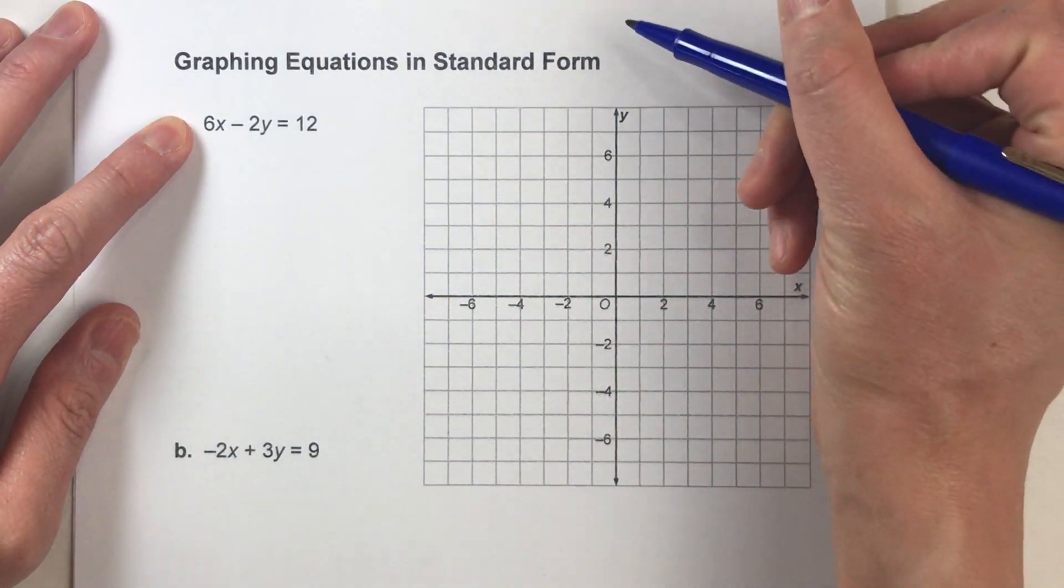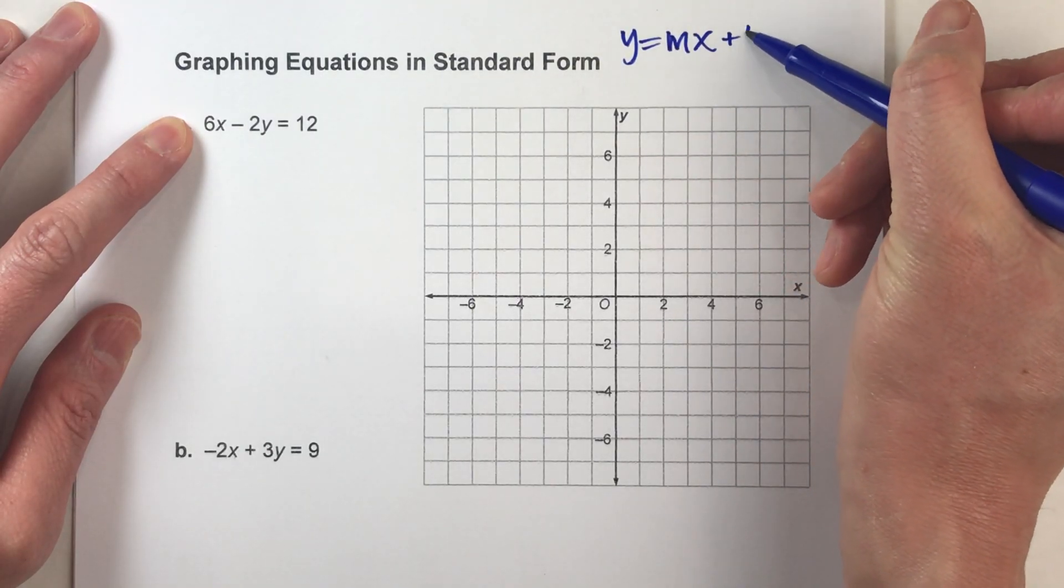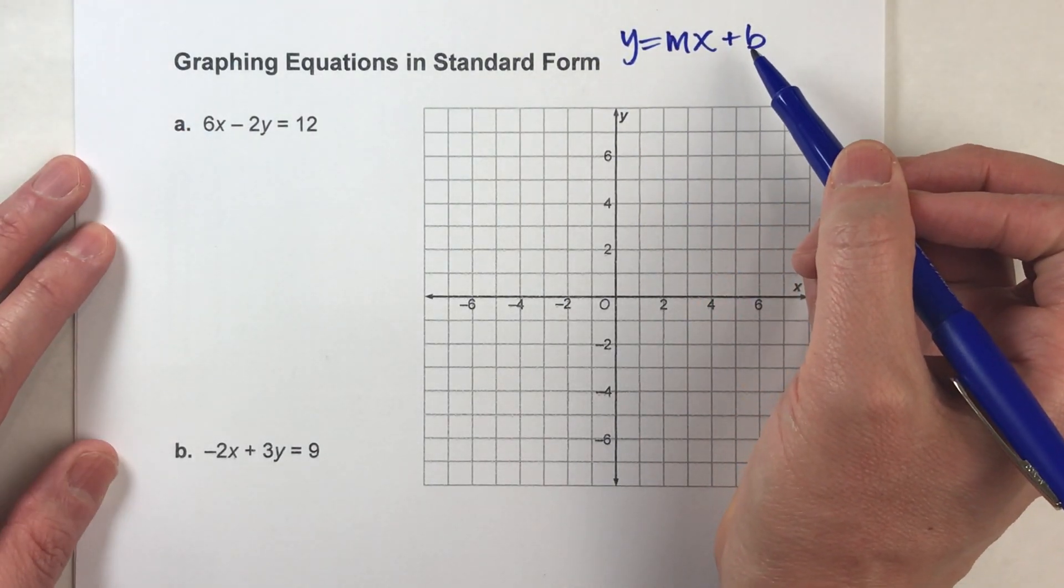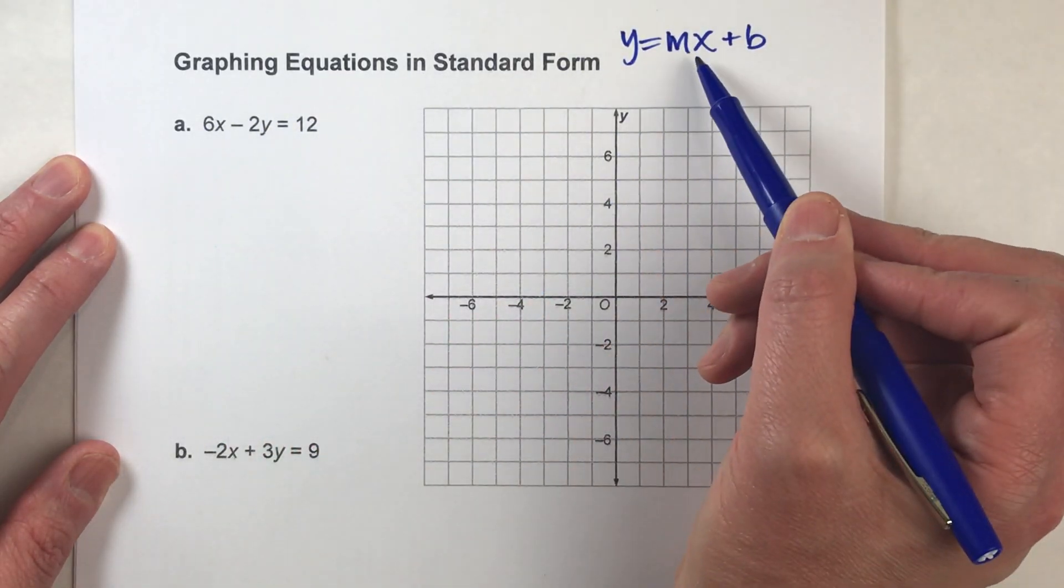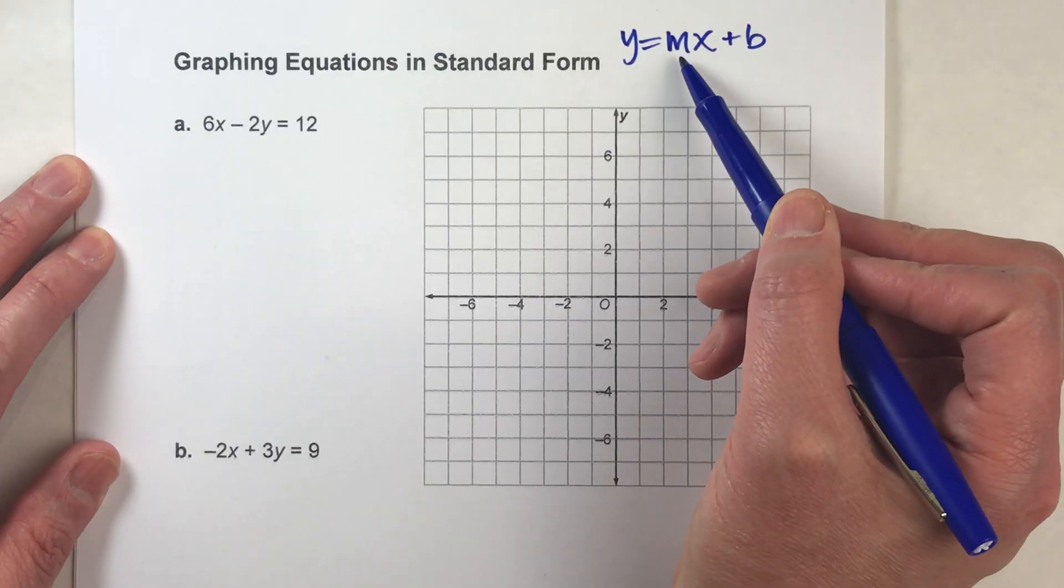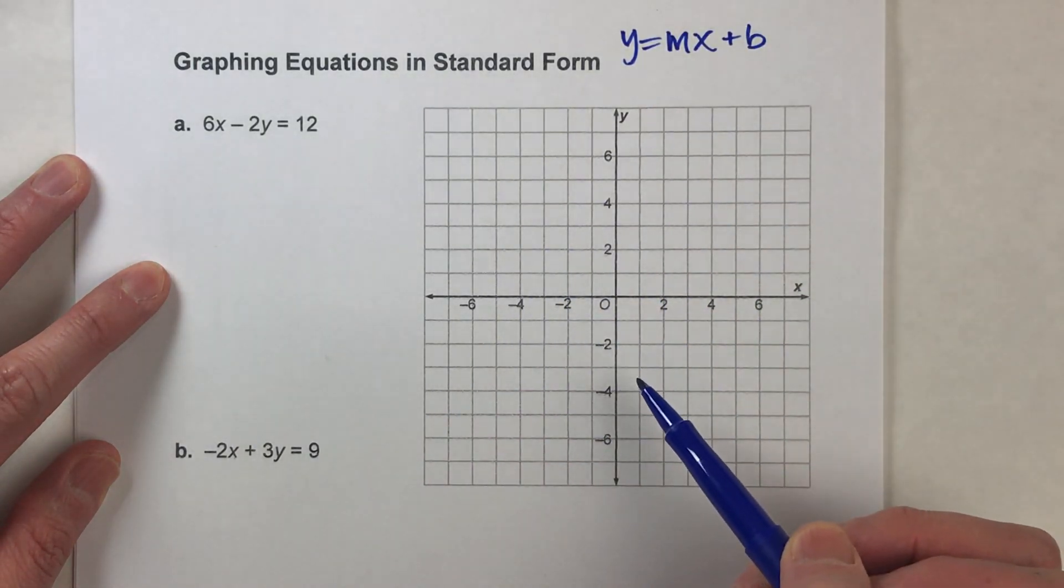So remember, slope-intercept form looks like this: y equals mx plus b. So if we can use algebra to rearrange this to look like that, then we'll know what the slope is and we'll know what the y-intercept is, and then we can graph it.